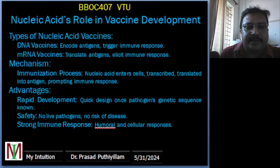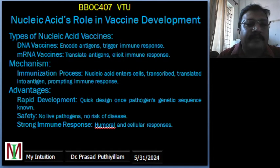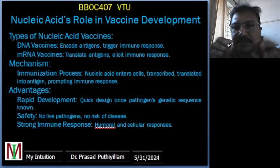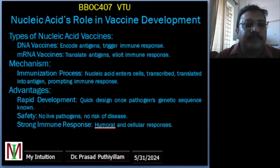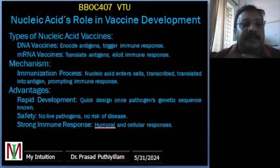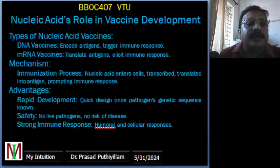The role in vaccine development: nucleic acids play a critical role in the development of modern vaccines, particularly DNA and mRNA vaccines. DNA vaccines contain engineered DNA that encodes an antigen — a protein from the pathogen, i.e., the virus which is attacking us. When injected, the DNA is taken up by cells which then produce the antigen, triggering an immune response. An example of such a DNA vaccine is the one developed for the Zika virus.